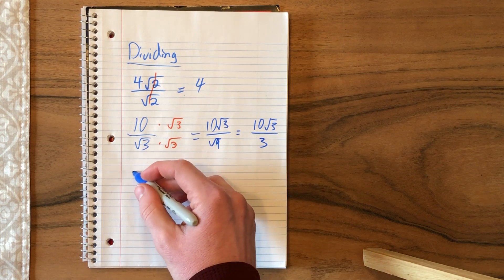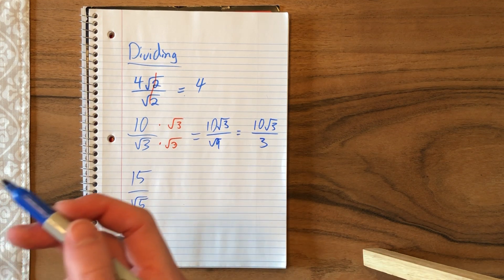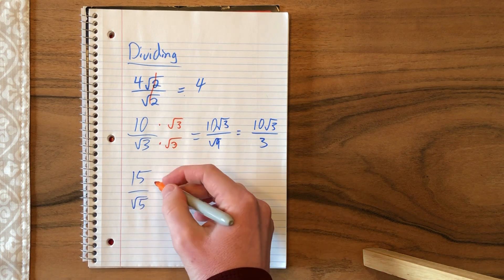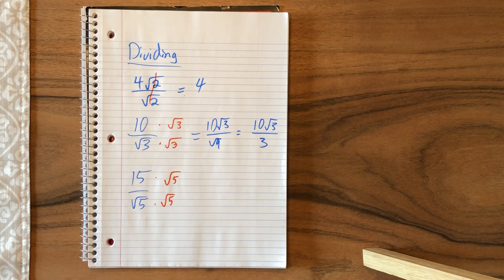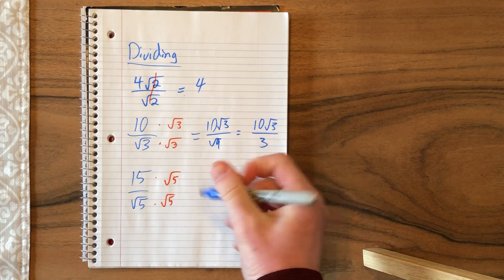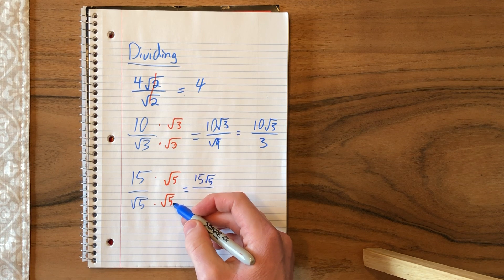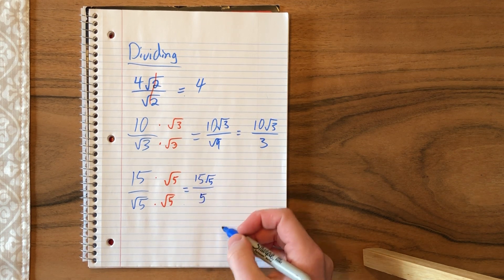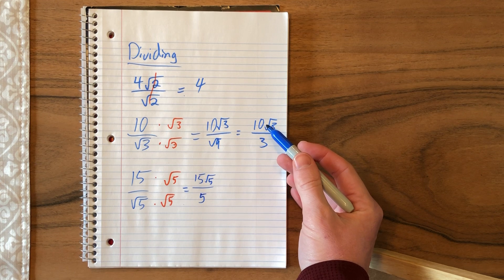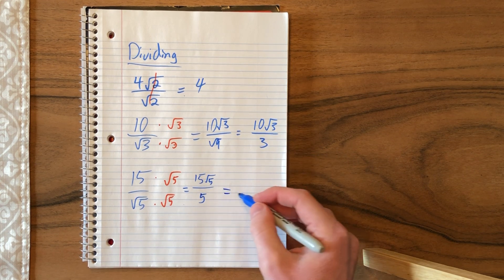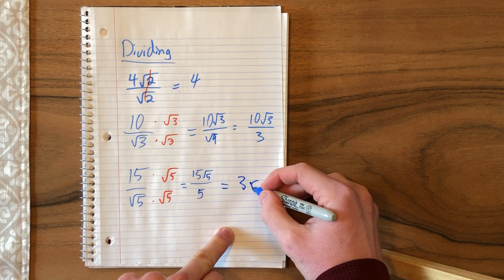One last example with that. Let's say you have 15 divided by the square root of 5. To get rid of that square root in the denominator, we multiply by the square root of 5 on top and bottom. On top, you get 15 root 5. On bottom, root 5 times root 5 is the square root of 25, or you could just write 5. One thing to notice about this problem that's a little different: here, 10 divided by 3, we can't do anything with that. However, 15 divided by 5, we can actually simplify that. 15 divided by 5 is 3, and you are left with 3 root 5.